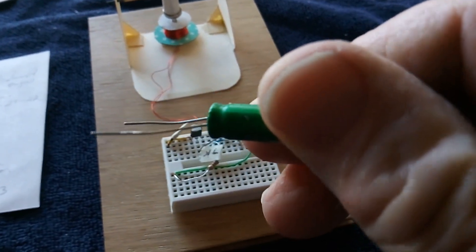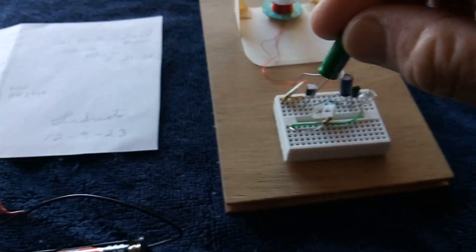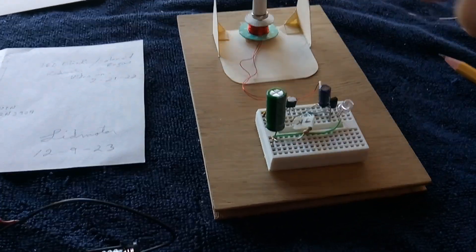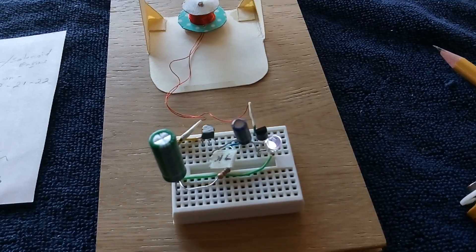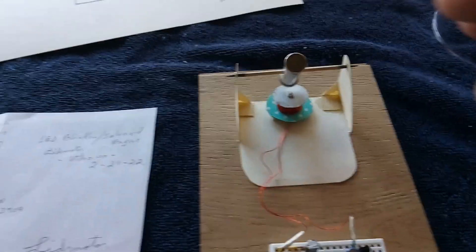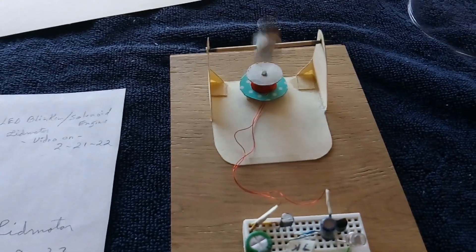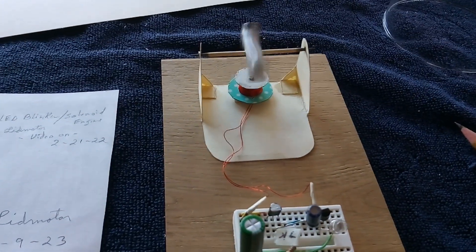What I've done here is I've just taken a 3 farad super cap, put about two and a half volts into it from batteries just to show how this runs. There's the blinking, okay, and it's not running. Now if I spin this up, now the motor's running with the blinking circuit.